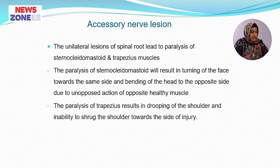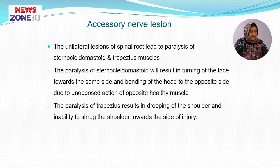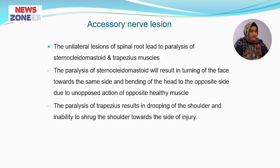In accessory nerve lesion, unilateral lesion of the spinal root leads to paralysis of the sternocleidomastoid and the trapezius muscle. Paralysis of the sternocleidomastoid results in turning of the face towards the same side and bending of the head towards the opposite side due to unopposed action of the opposite healthy muscle. Paralysis of the trapezius results in drooping of the shoulder and inability to shrug the shoulder on the side of the injury.